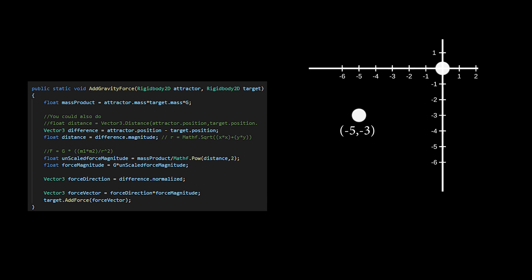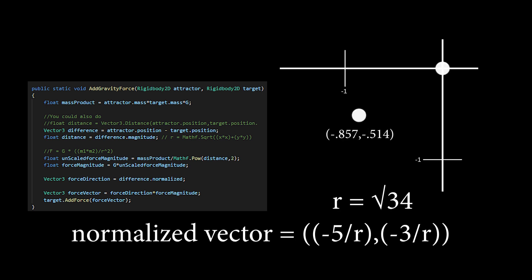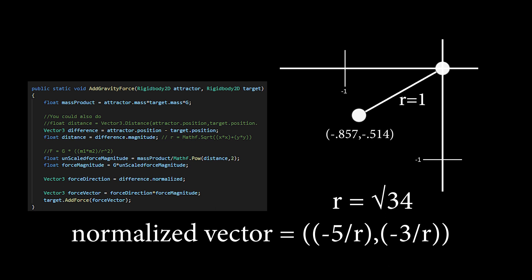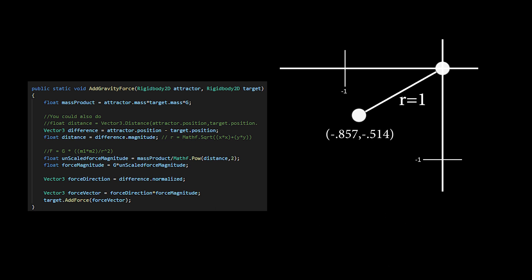We just need to apply it in the direction of the attractor. To do this, we can take our previously calculated difference and normalize this vector. A normalized vector will always return 1 if Pythagoras' theorem is applied to it. To put it another way, a collection of all possible normalized vectors will draw a circle circumference of radius 1.